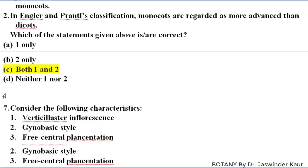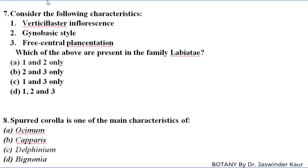Consider the following characteristics: verticillaster inflorescence, gynobasic style, and free central placentation. Which of the above are present in family Lamiaceae? In Lamiaceae, verticillaster inflorescence and gynobasic style are both present, but placentation in Lamiaceae is axile — so the third is wrong. Only characteristics one and two are correct.